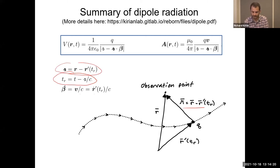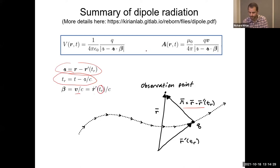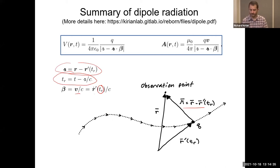The retarded time is defined here. The beta term — which you'll know from special relativity — is the velocity divided by the speed of light, written as a vector with direction, evaluated at the retarded time. These equations aren't simple to use, but the nice thing is they're fully compatible with special relativity and give correct results even for relativistic particles.